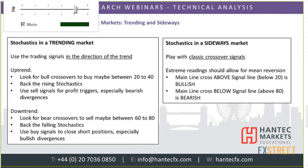Momentum indicators across the board are read differently in different markets, so you need to identify the market you're in. If you're in a trending market, either uptrend or downtrend, the way you use stochastics is different to how you use them in a sideways market. In a sideways market, you play the classic crossover sell signals, use the extreme levels, and trade a mean reversion — looking to sell when you get a signal around 80 and buy when you get a signal around 20.